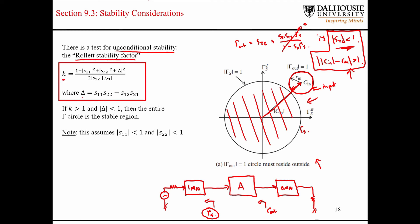We won't go through that derivation. The expression uses the determinant of the S-parameter matrix, which shows up quite a bit. The check for unconditional stability uses the Rollett stability factor: if it is greater than one and the magnitude of the determinant is less than one, then the entire interior of the unit circle — whether Γ_S or Γ_L — is in the stable region, and you're not limited to any subset of that range.